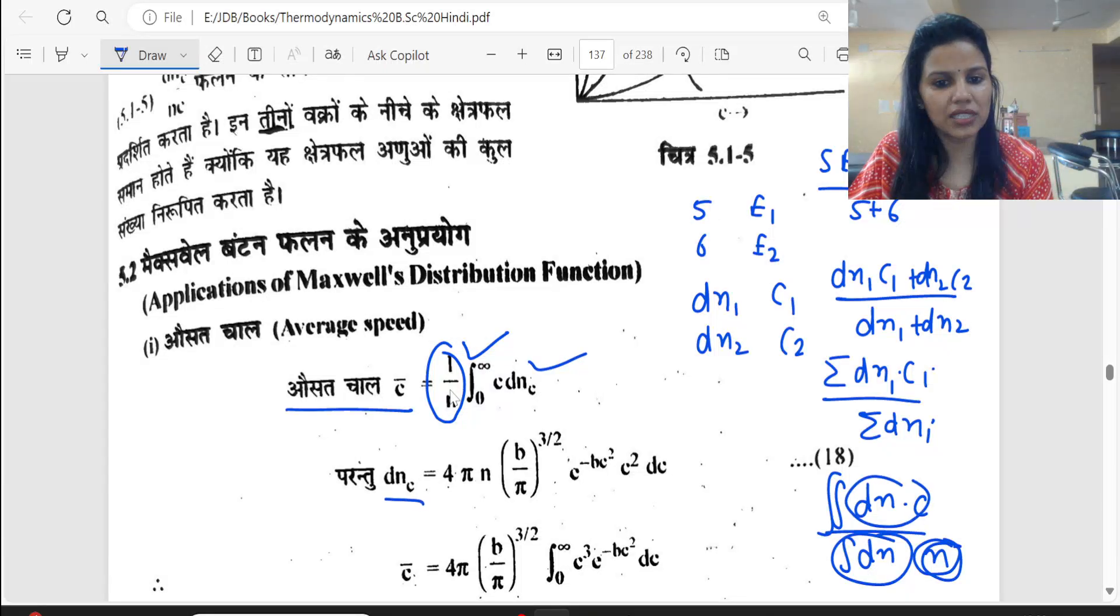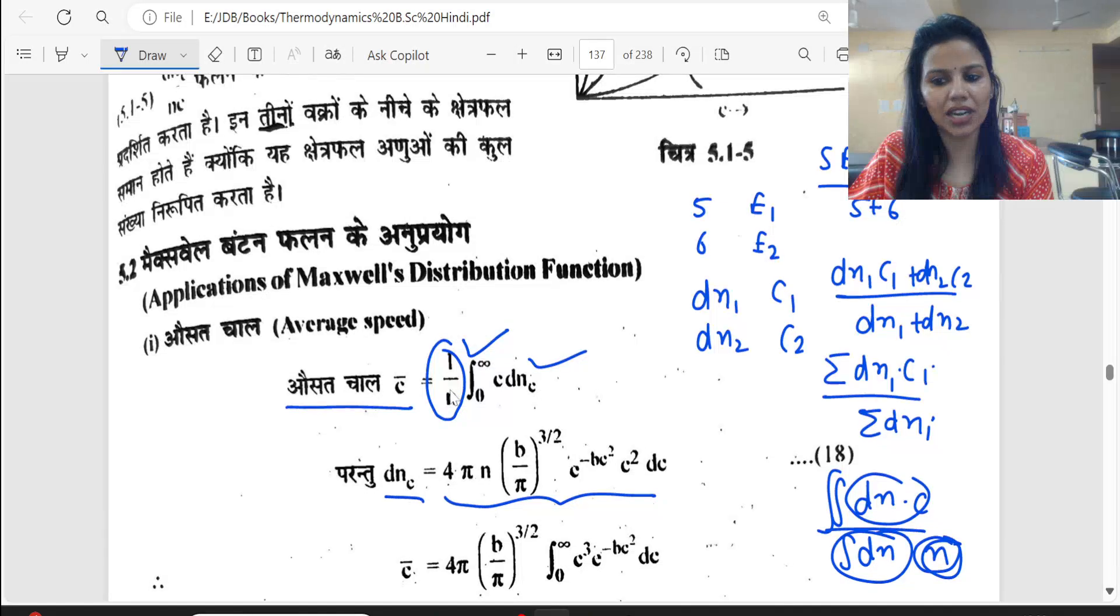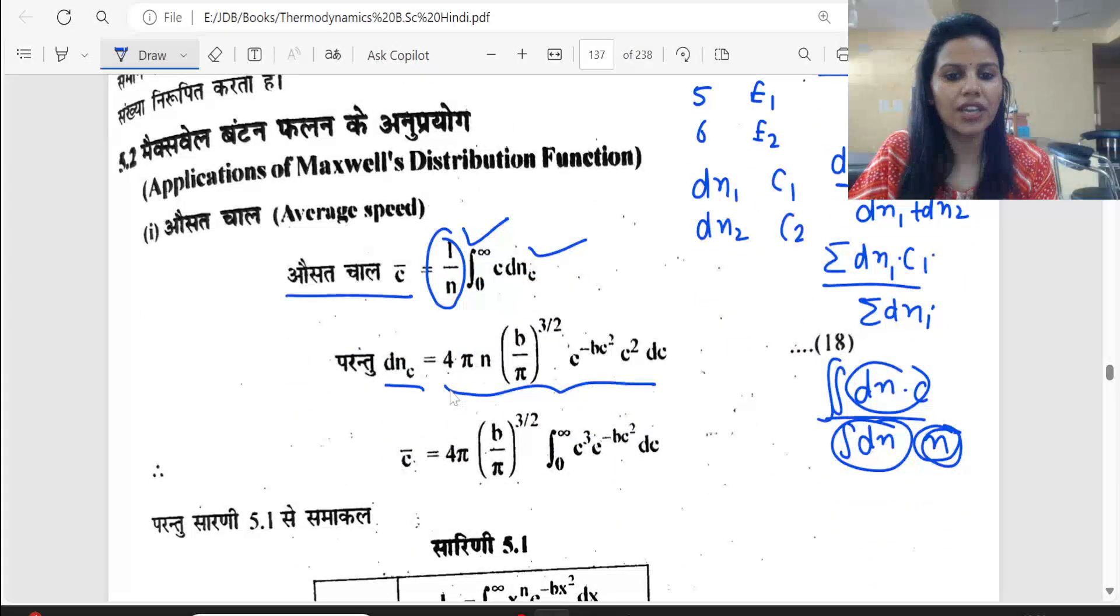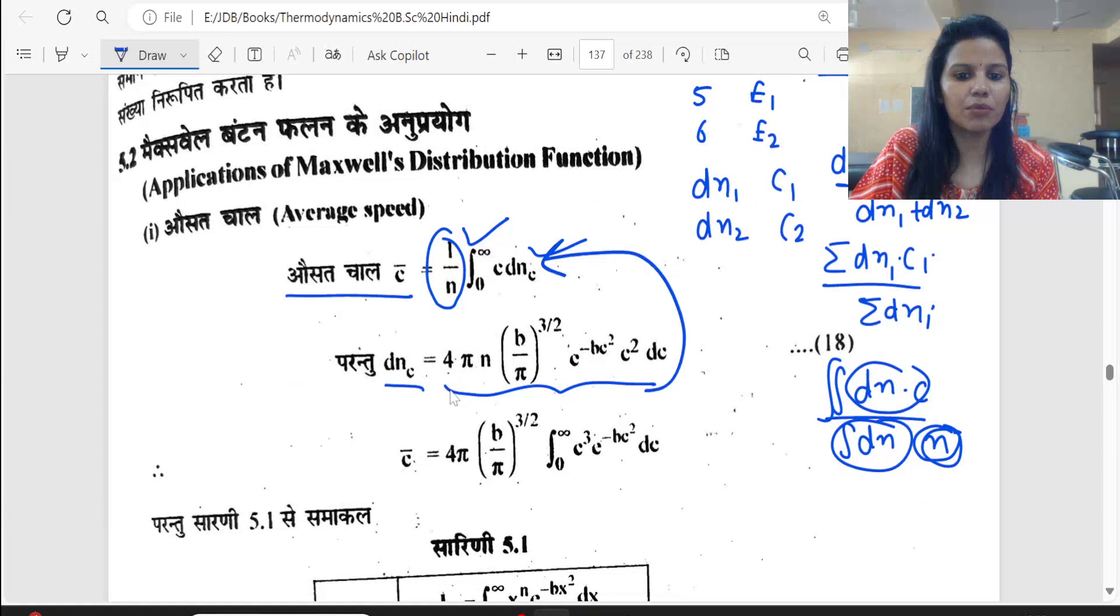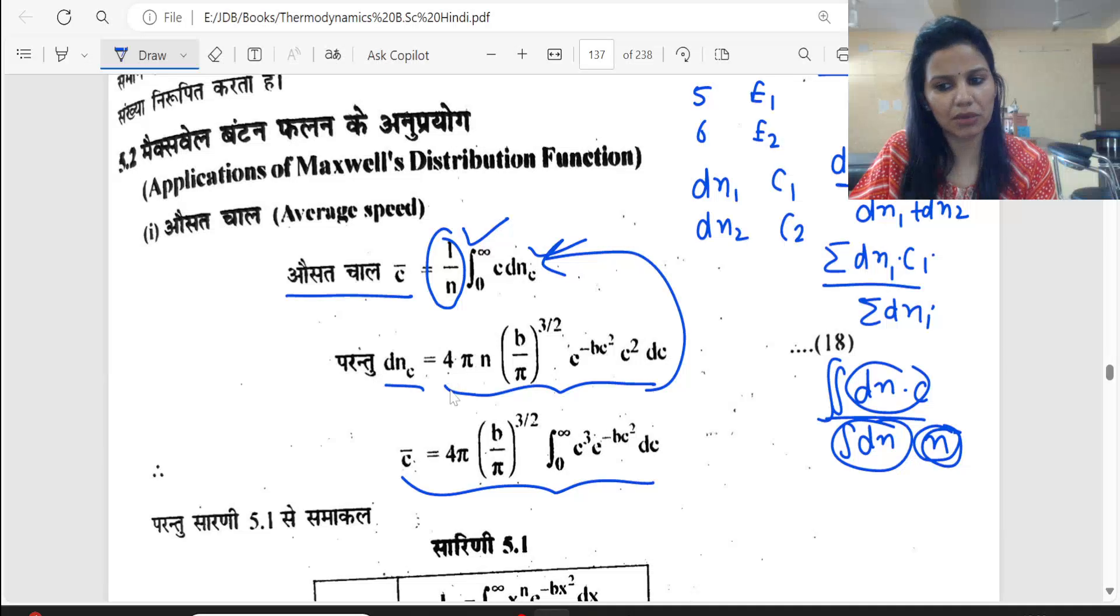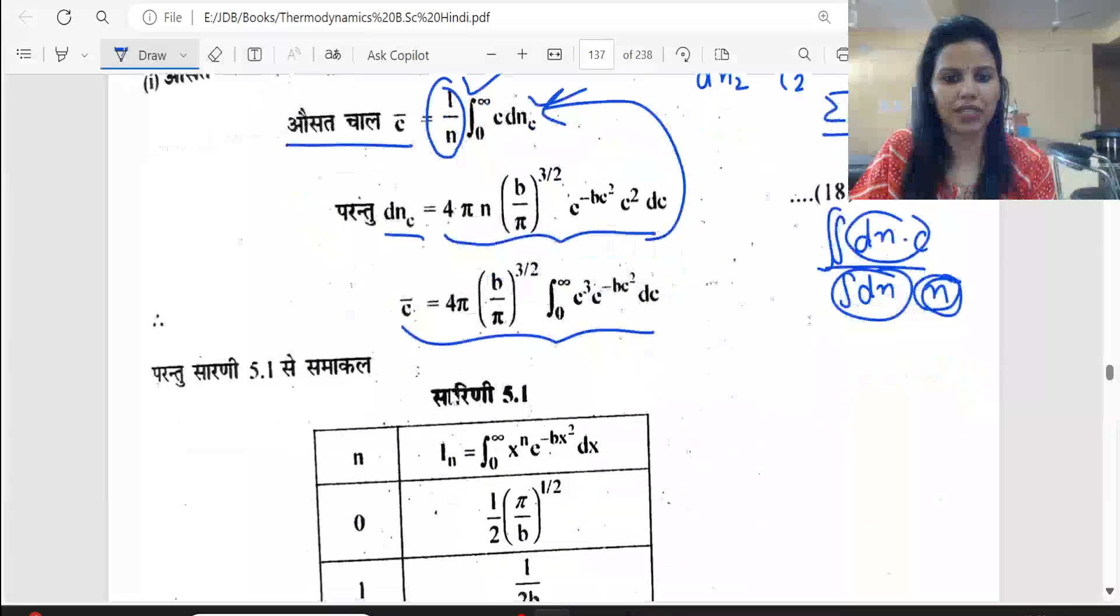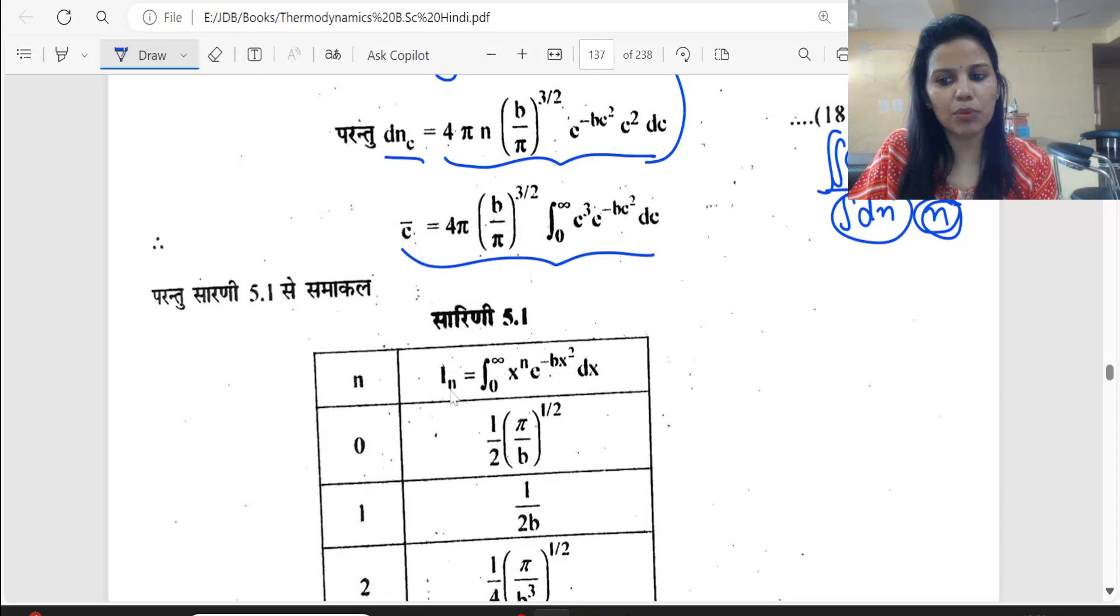The value of dNC we have from the last lecture. We will put it here. We will put the constant and the remaining part of the integration. Now we have a table given you.